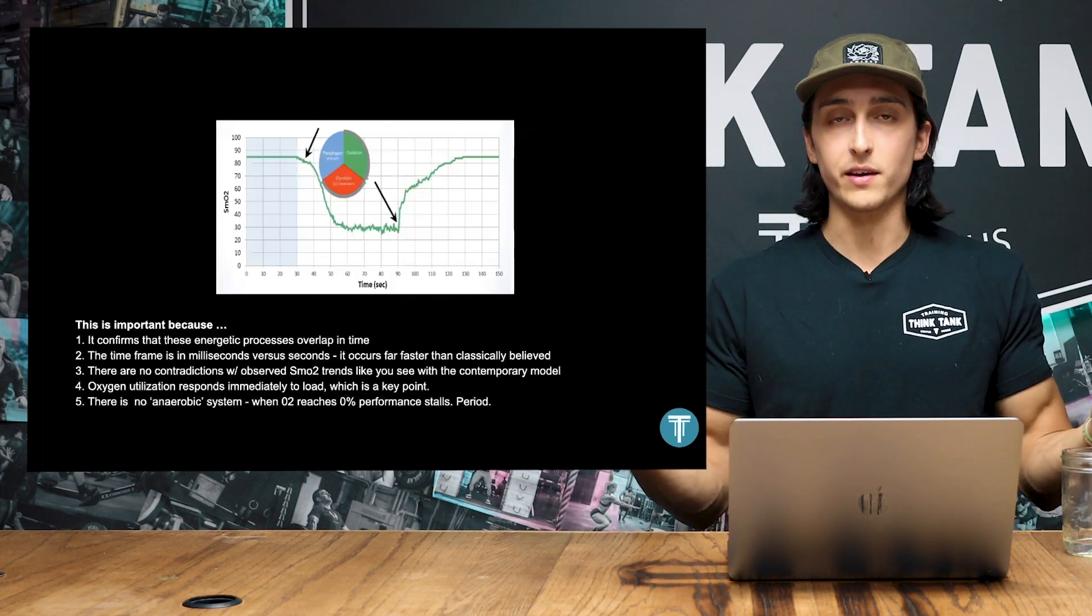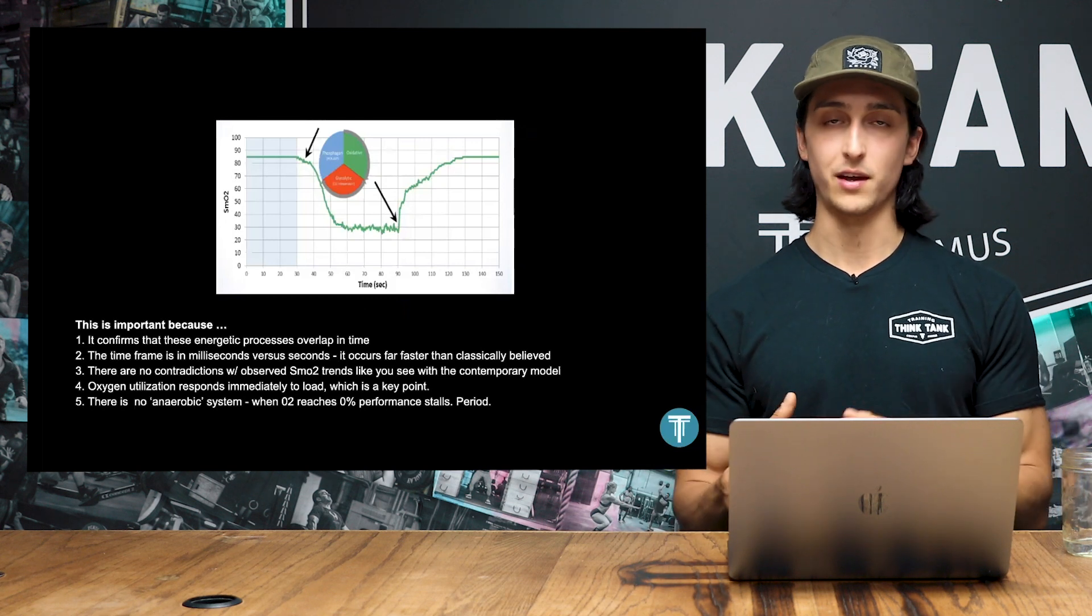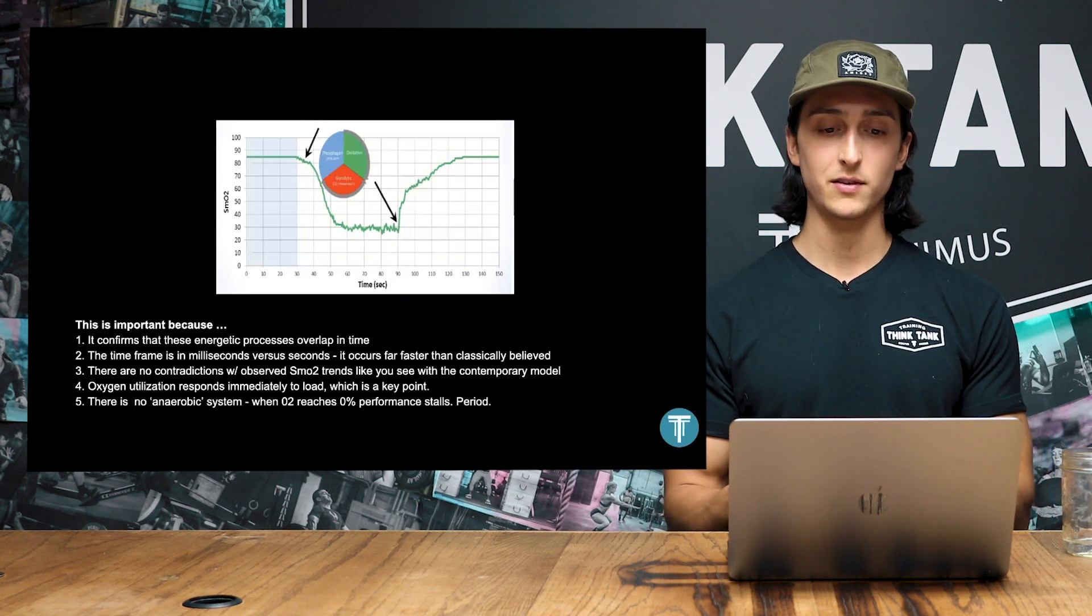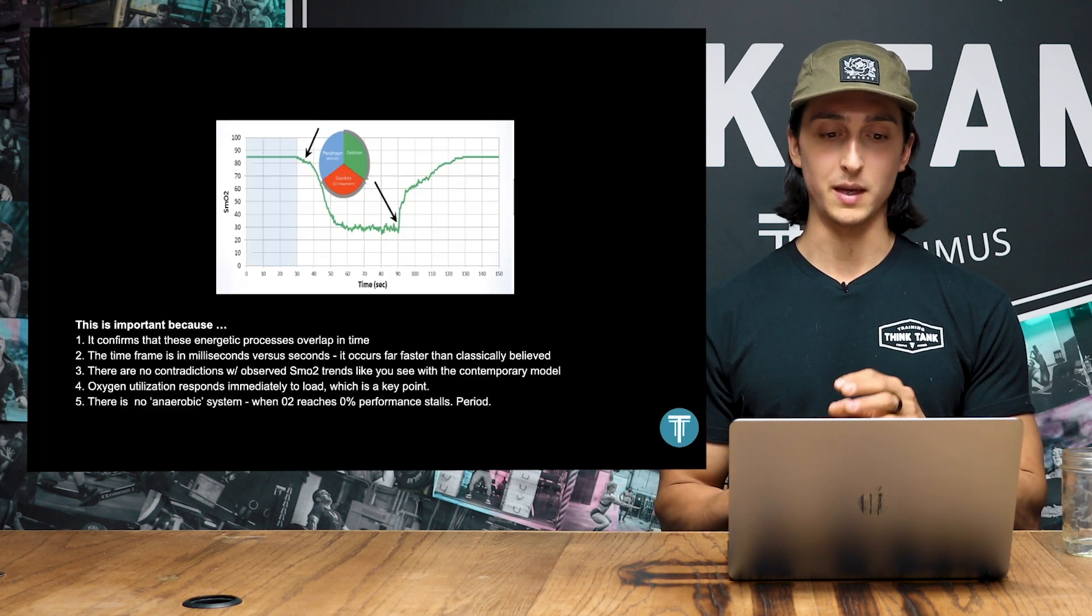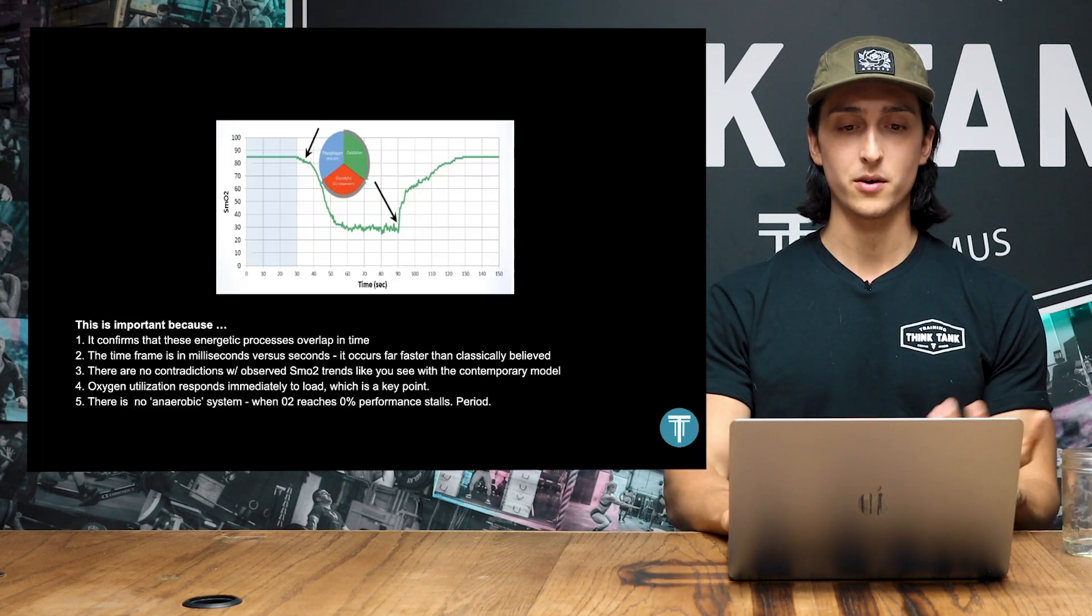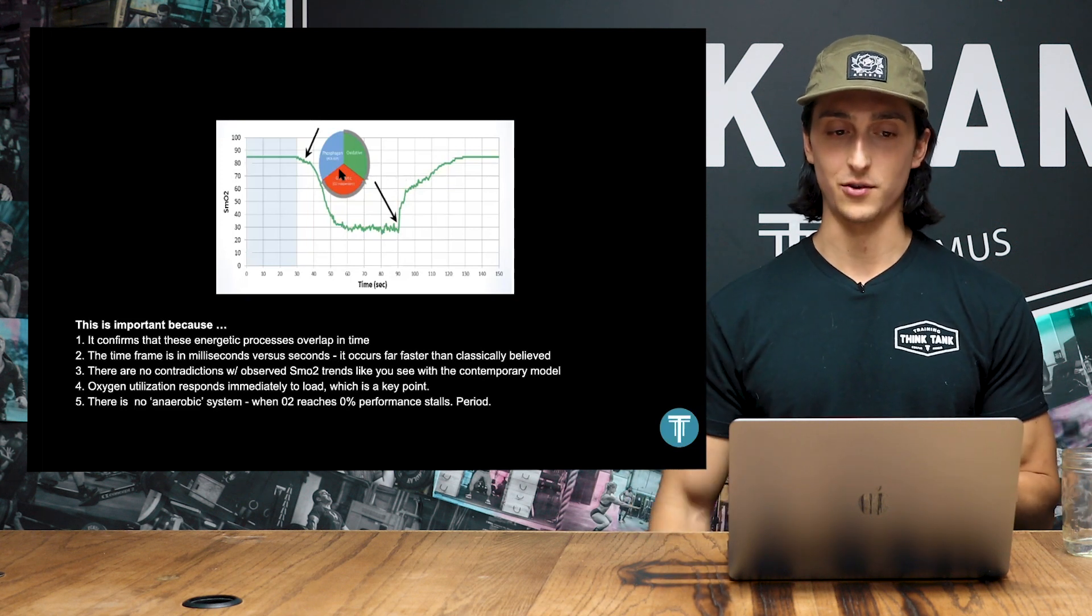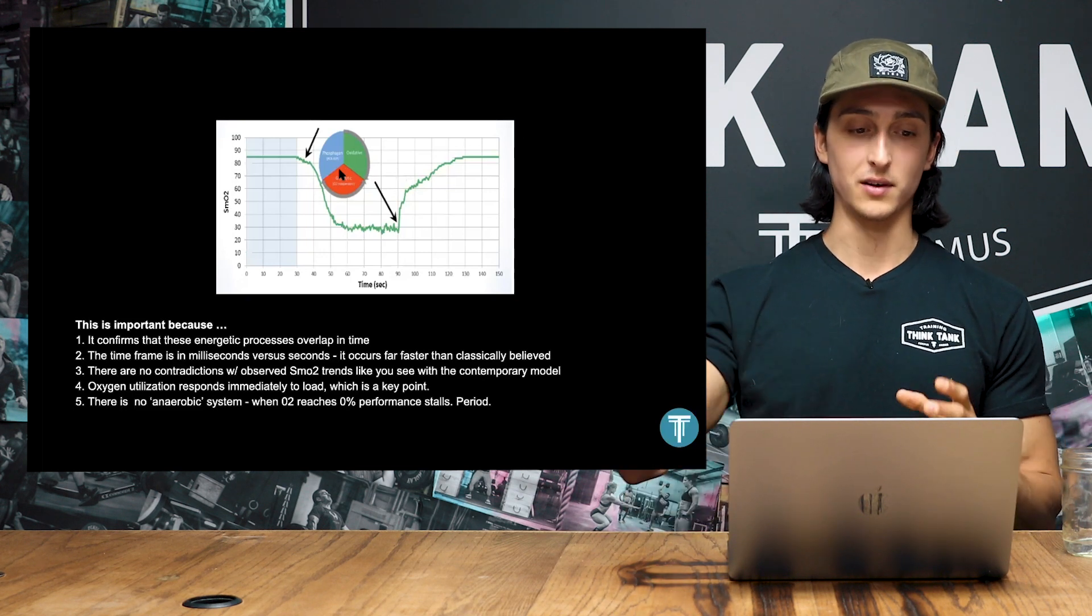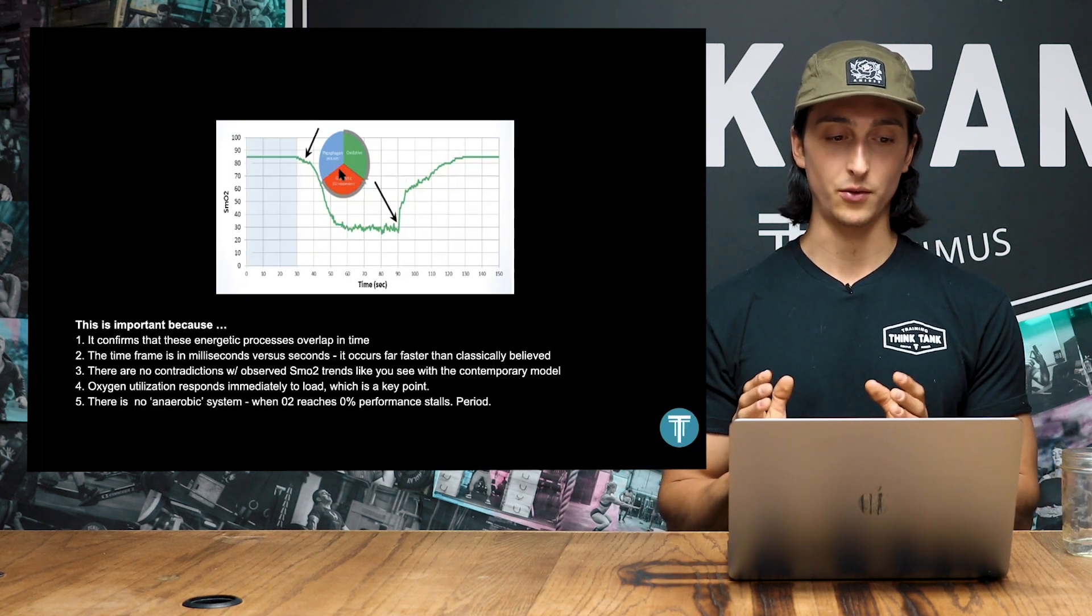So why are these things important? Why do we actually need to know these things? One, this model confirms that all these energetic processes overlap in time. That timeframe is milliseconds versus seconds. So it occurs way faster than people classically believed. The next is that there's no contradictions with the observed SMO2 trends, like you would see in that contemporary model. And in the picture here, we see an athlete doing a sprint and we're measuring muscle oxygen saturation. As soon as they start the sprint, oxygen's going down in the muscle. As soon as they stop, oxygen comes back up. So we see oxygen utilization response immediately to load. And that's a really key point.